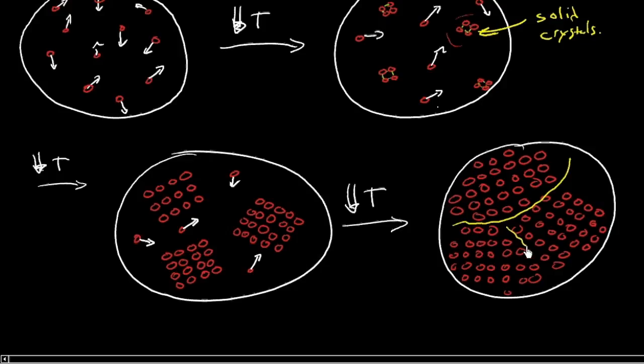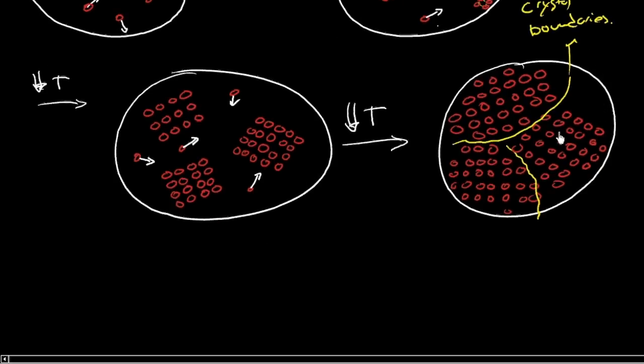So if I kind of highlight that for you, you may see it goes somewhere through there. And those things are crystal boundaries. But in the context of solids, we usually don't use the term crystal. Instead, we call them grains. So these are grain boundaries.